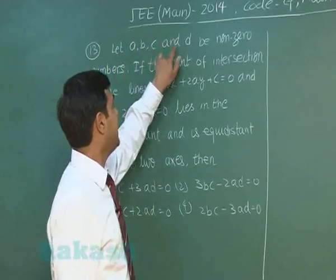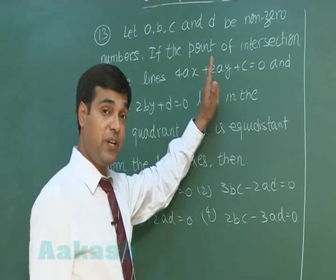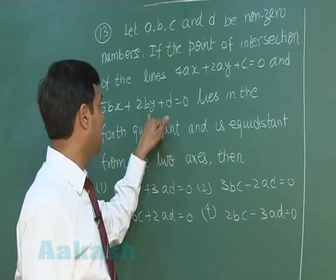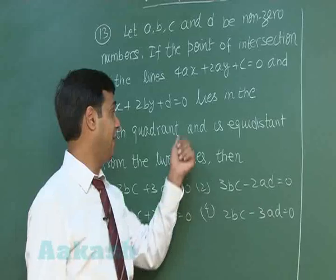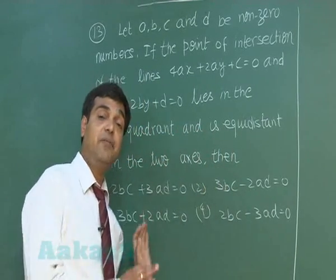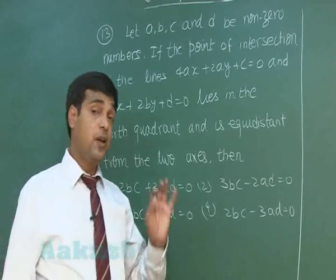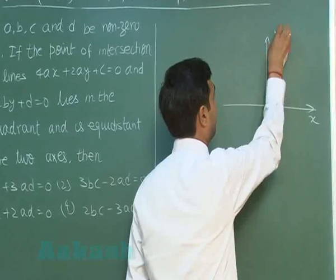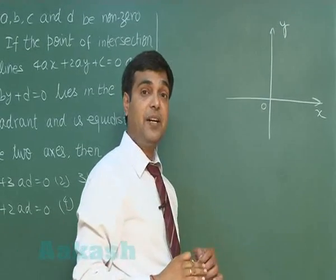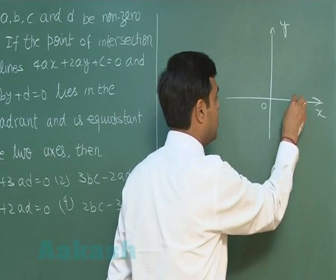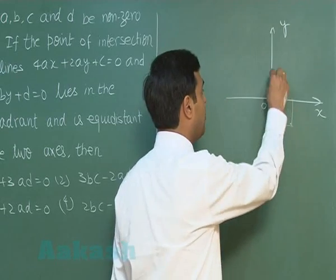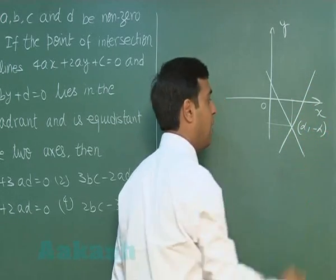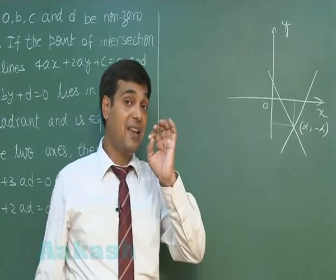Let A, B, C and D be non-zero numbers. If the point of intersection of the lines 4Ax plus 2Ay plus C equals 0 and 5Bx plus 2By plus D equals 0 lies in the fourth quadrant and is equidistant from two axes, then we have to find the relation between A, B, C and D. The two lines are intersecting in the fourth quadrant such that the point of intersection is equidistant from the two axes, so it is at alpha comma minus alpha.